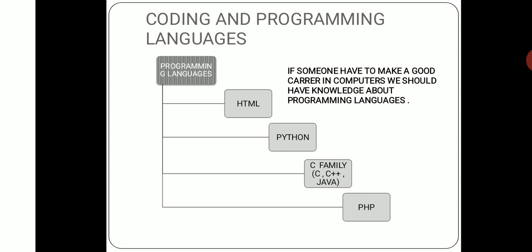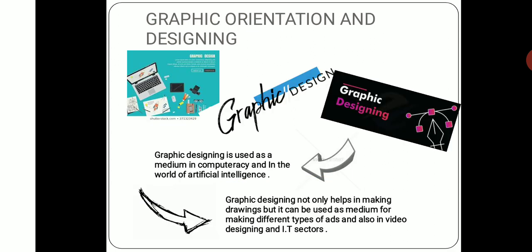Everyone in this world knows about computers, but if you want to become a programmer, if you want to become smarter than anybody else, you have to go deeply into the particular subjects. At that time you will feel like the king of the world in the computer scenario. Now I am talking about graphic orientation and designing — it's only one part among many many parts and topics.